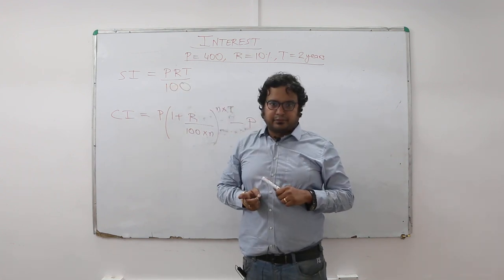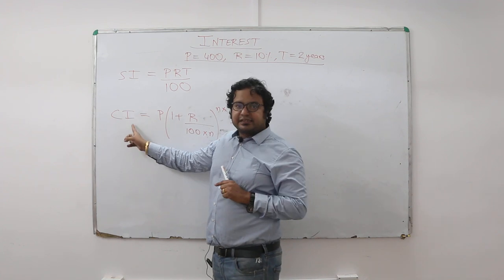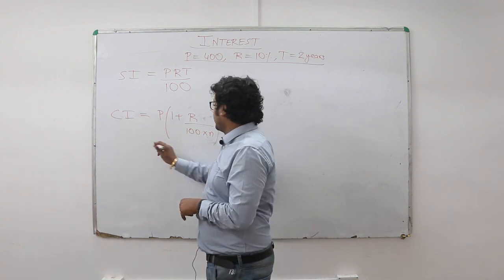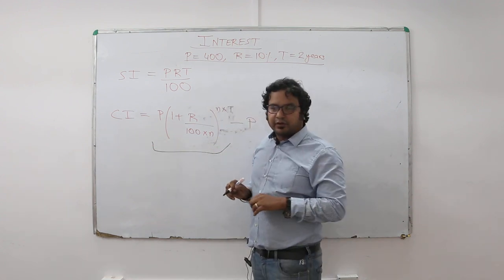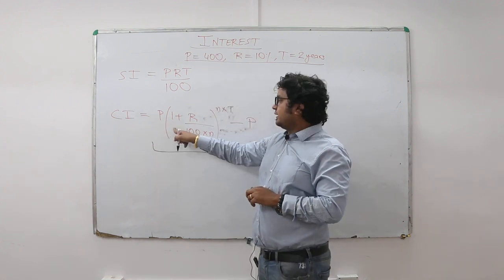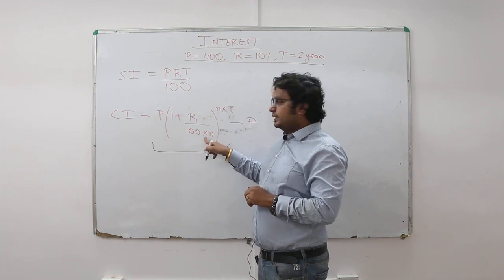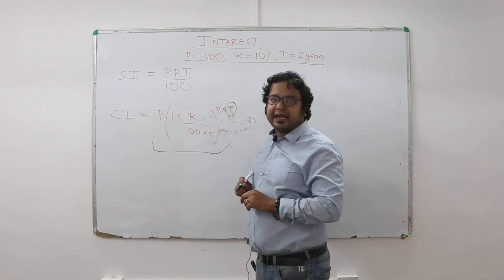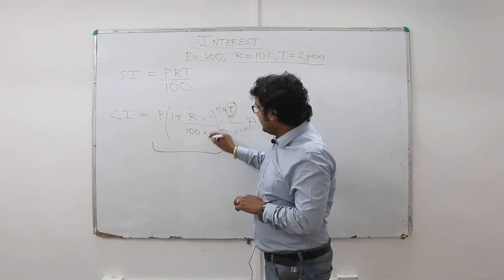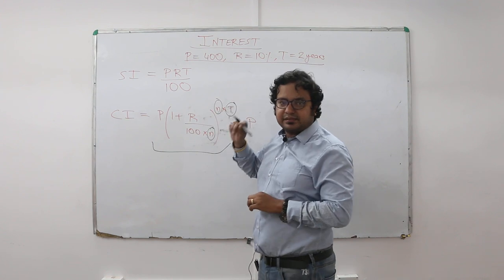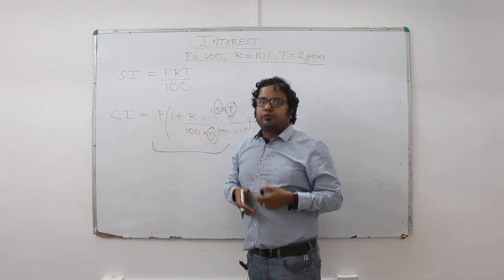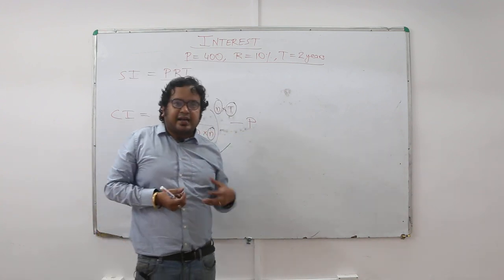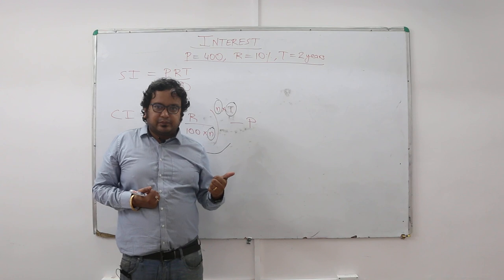Compound interest is given by, now this first part is the formula for amount: P into (1 plus R by 100) to the power N into T. This T denotes time in years, N denotes number of times in a year the amount is compounded. For example, if I say twice a year it means N is equal to 2, if I say quarterly N is equal to 4.